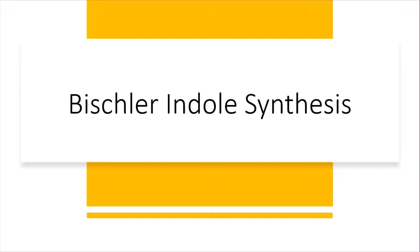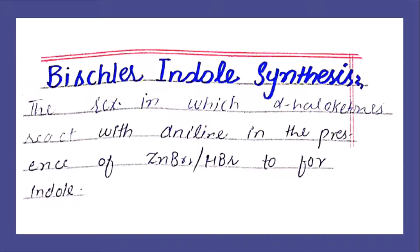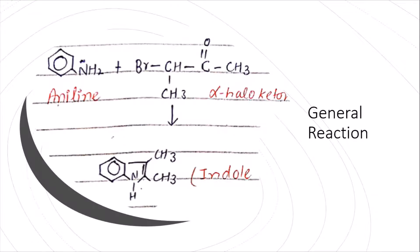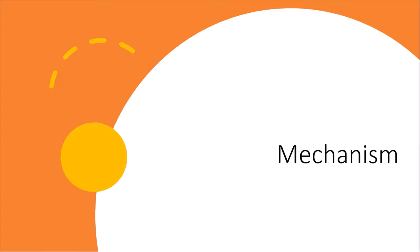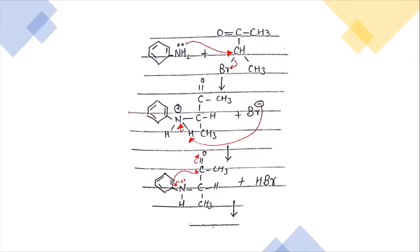In this video we will talk about another way of synthesis of indole — the Bischler Indole Synthesis. In this reaction, an alpha halo ketone reacts with aniline in the presence of zinc bromide or HBr to form indole. This is the general reaction for Bischler Indole Synthesis. Next, we will talk about its mechanism, which is quite easy and similar to other mechanisms.